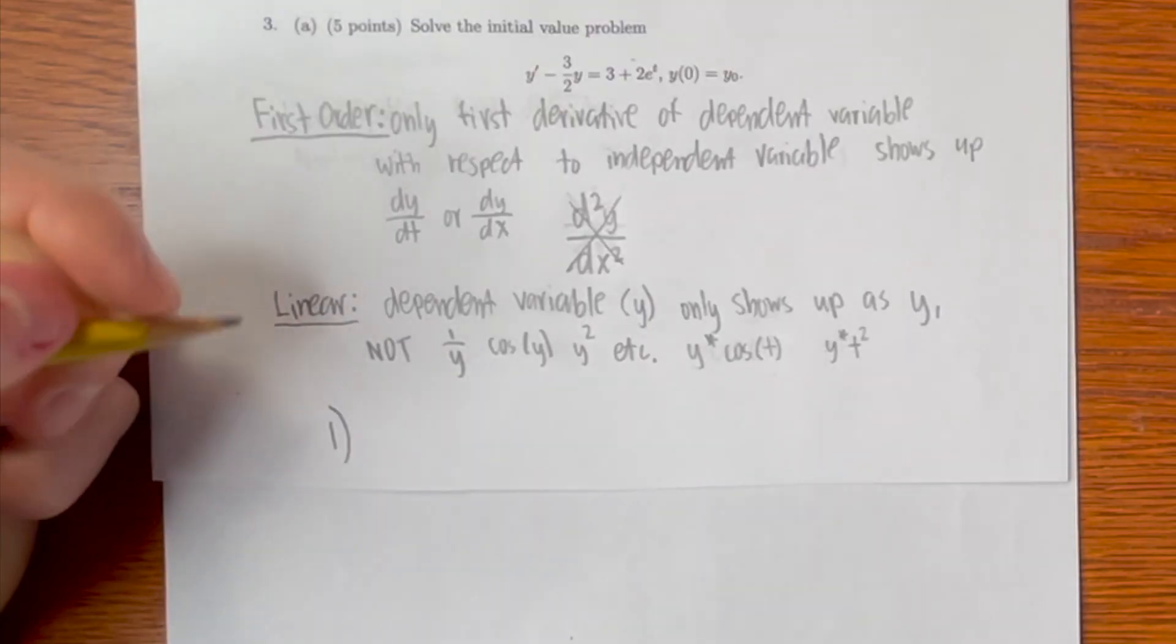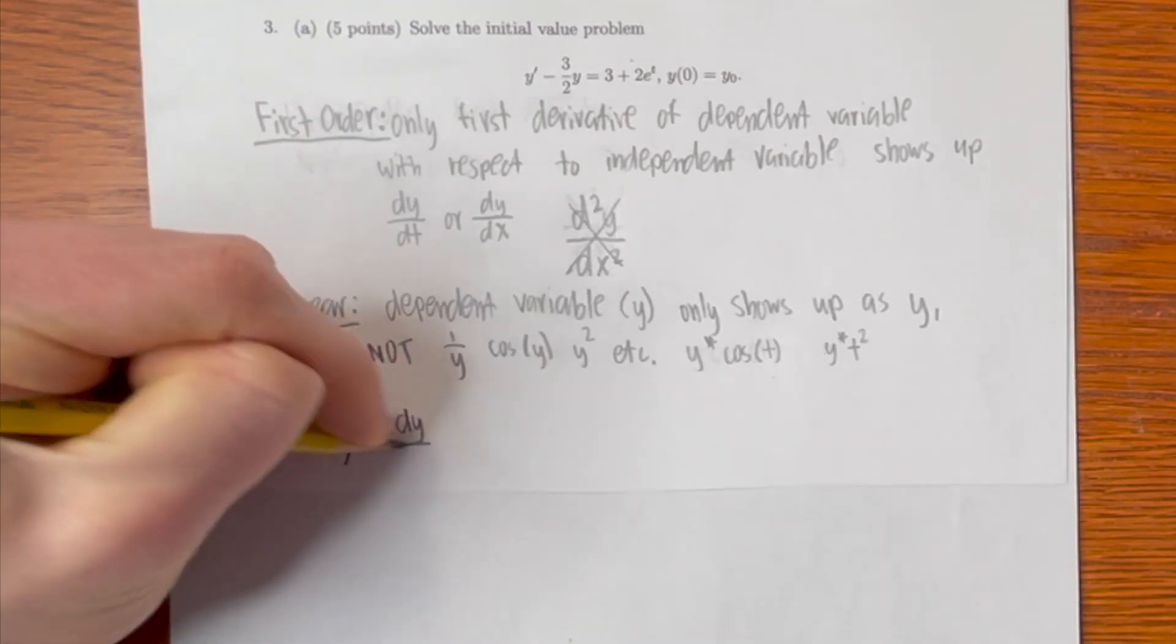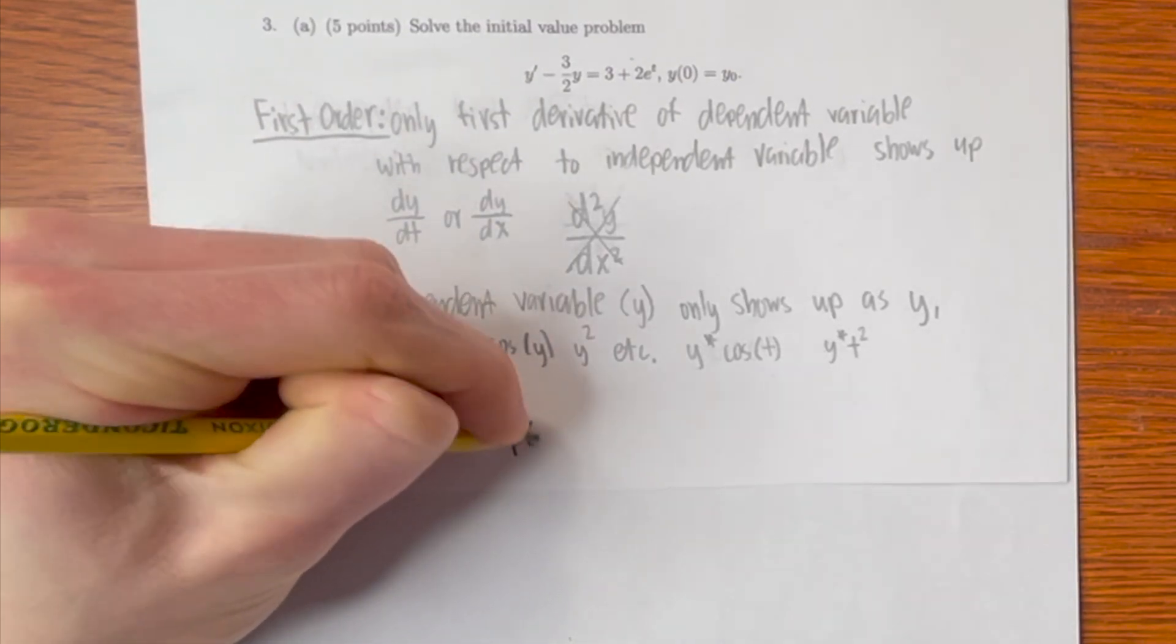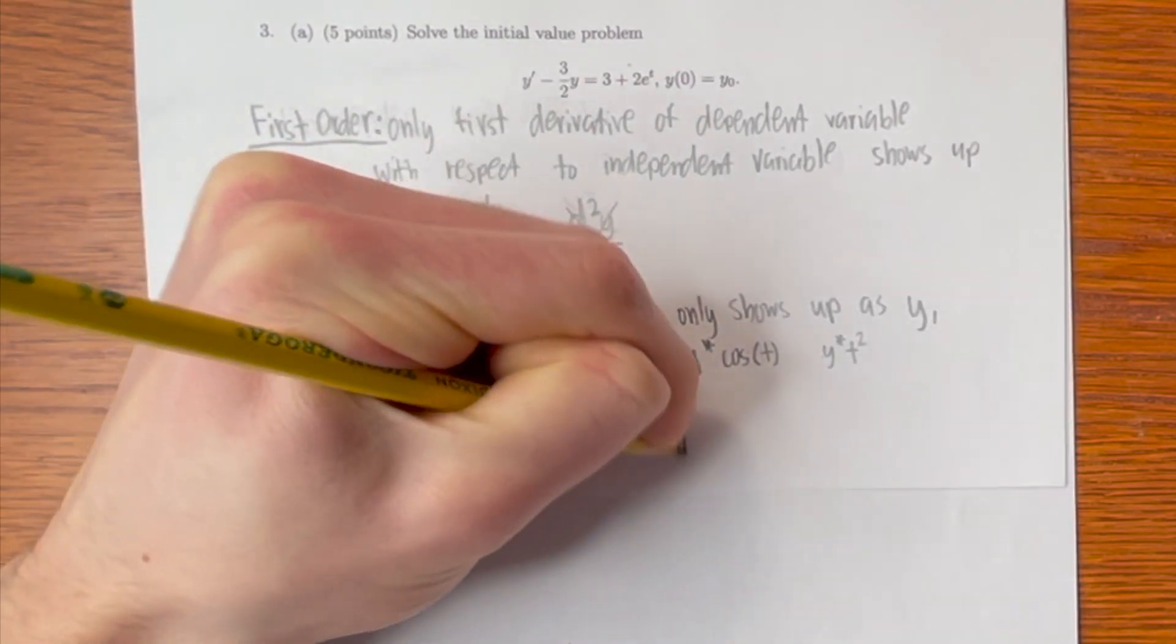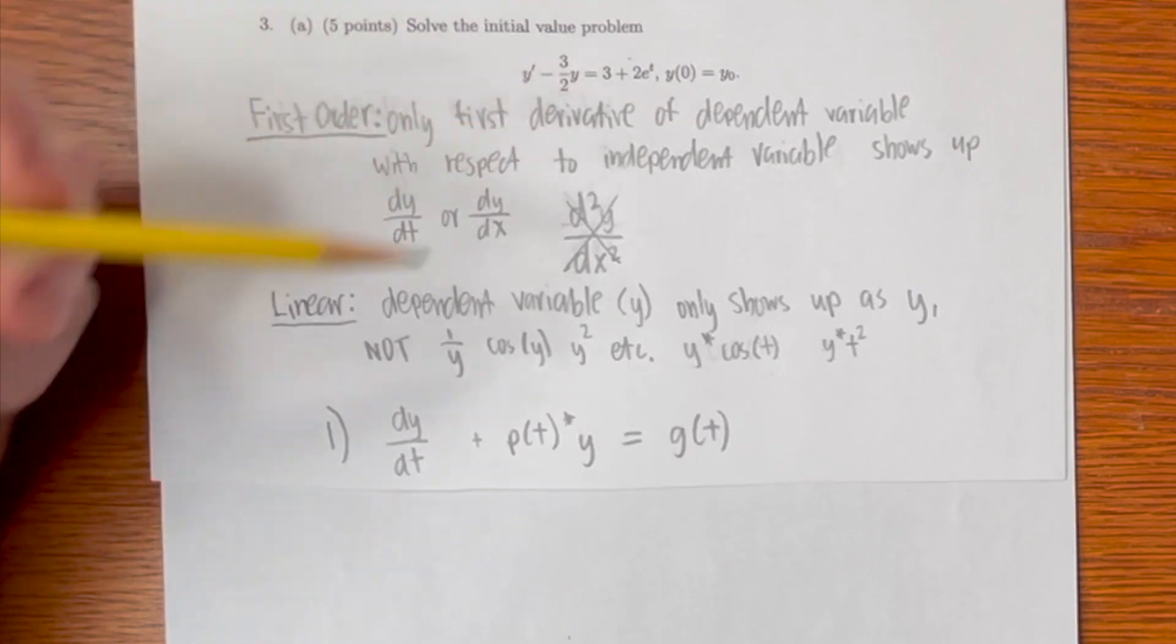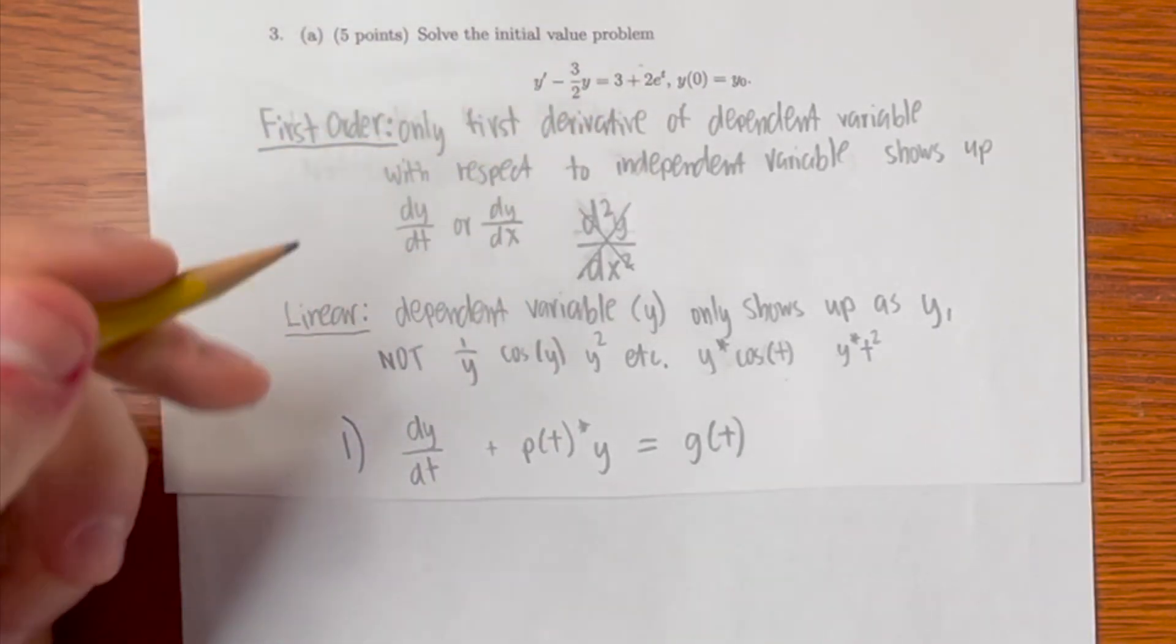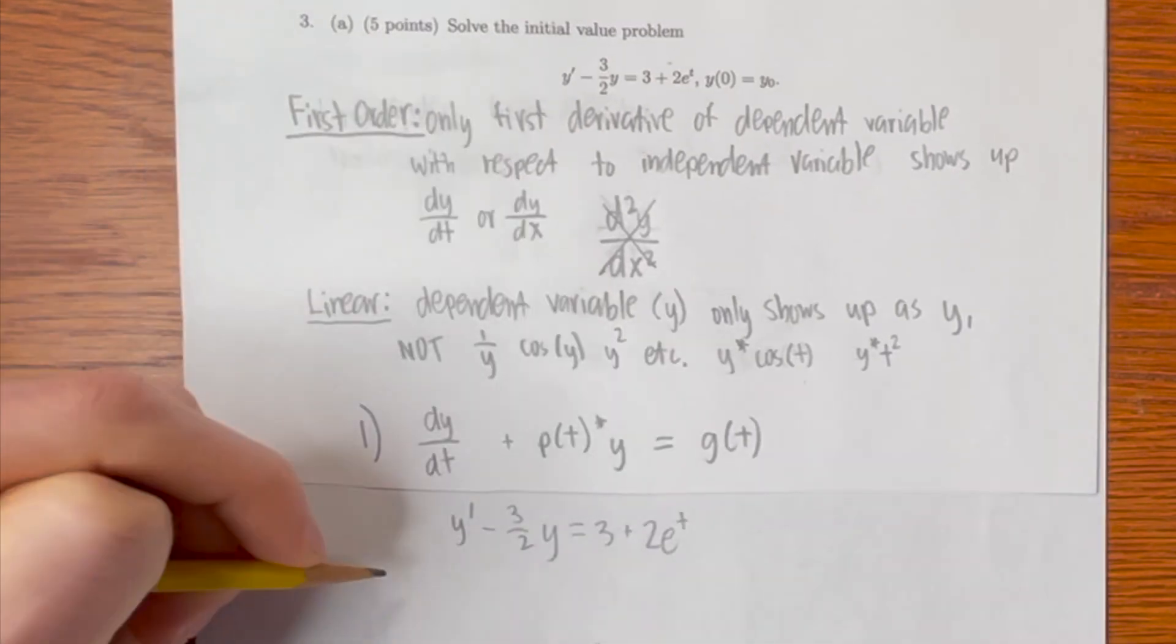The first step is to write out the standard form, which is dy/dt + p(t)y = g(t). We have to put the differential equation given into this standard form. Above, it is already written in the standard form, so we can keep it the same.